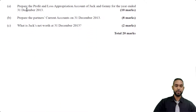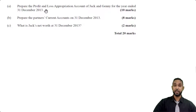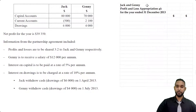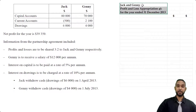We have three requirements: prepare the profit and loss appropriation account of Jack and Jenny for the year ended 31st December 2013; prepare current accounts as at 31st December 2013; and find Jack's net worth. Let's get the appropriation account going. Always remember to head up your appropriation account properly — the partner's profit and loss appropriation account for the year ended 31st December 2013, in dollar figures.